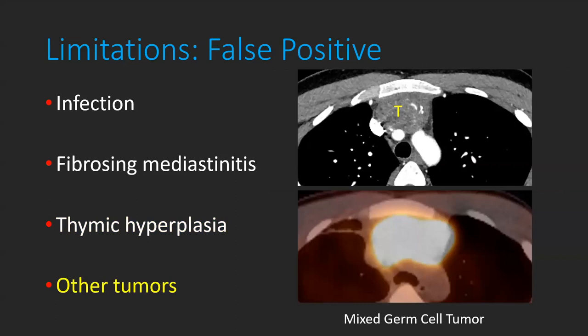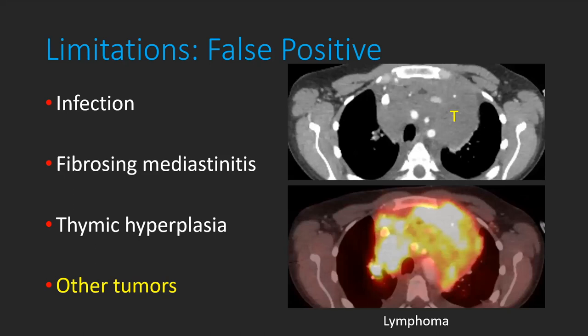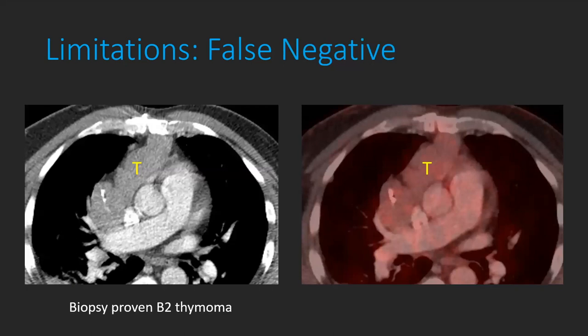A final false positive scenario: PET CT cannot differentiate thymic malignancies from other hypermetabolic prevascular tumors. A mixed germ cell tumor or a large hypermetabolic prevascular lymphoma can look very similar to a thymic tumor on PET CT. Although the suggestion of lymphoma may come from vascular structures being engulfed rather than invaded, the bottom line is that there are several false positive scenarios to be aware of when imaging the thymus.